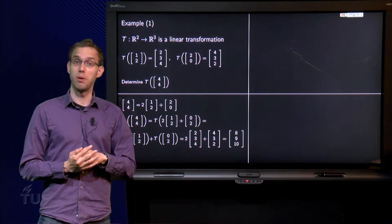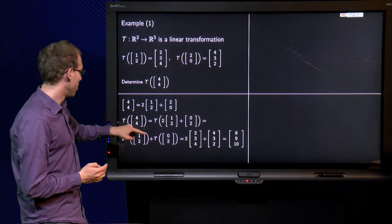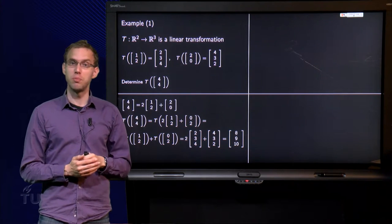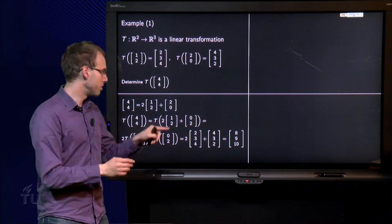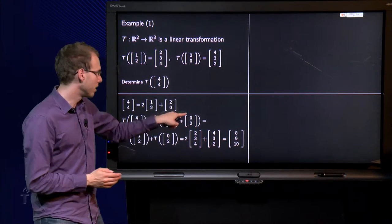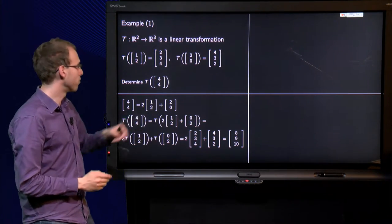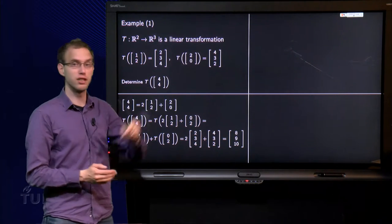But now we can use the properties of linear transformations. We know that the image of 2 times (1,2) plus (2,0) equals 2 times the image of (1,2) plus the image of (2,0). You can split this all up because the transformation T is a linear transformation.